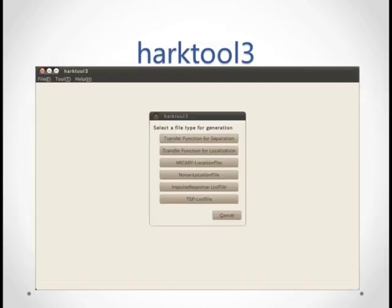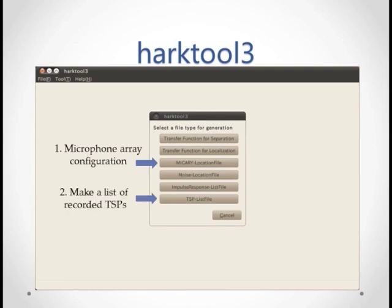Once we've finished recording with WIOS, we can use HARK Tool 3 to calculate the transfer function. To do this, first we'll need to generate two files. One that contains the microphone array configuration, and one that contains a list of the TSP recordings. Then we'll simply feed these files into transfer function generators for sound separation and localization.